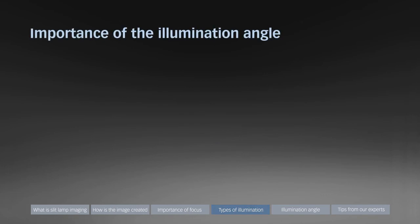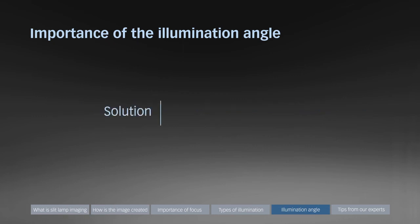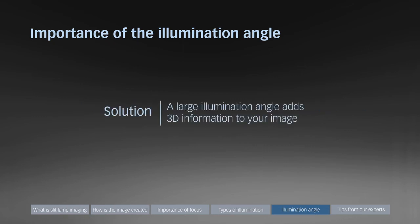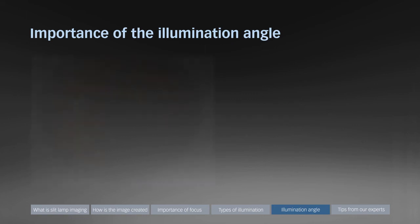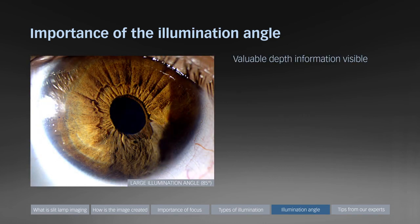This section highlights the importance of the illumination angle. Digital slit lamp imaging is static and two-dimensional, while observation is dynamic and three-dimensional. A solution is to use a large illumination angle, which adds 3D information to your image. An image captured with a small illumination angle of about 30 degrees nicely shows the color of the iris but does not give any depth information. The same eye captured with a large illumination angle of 85 degrees shows how shadow casting exposes 3D information of the tumor.